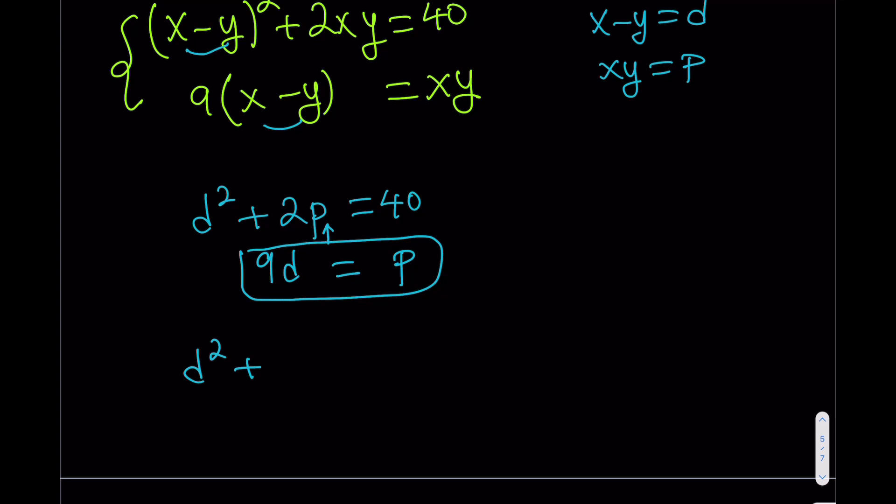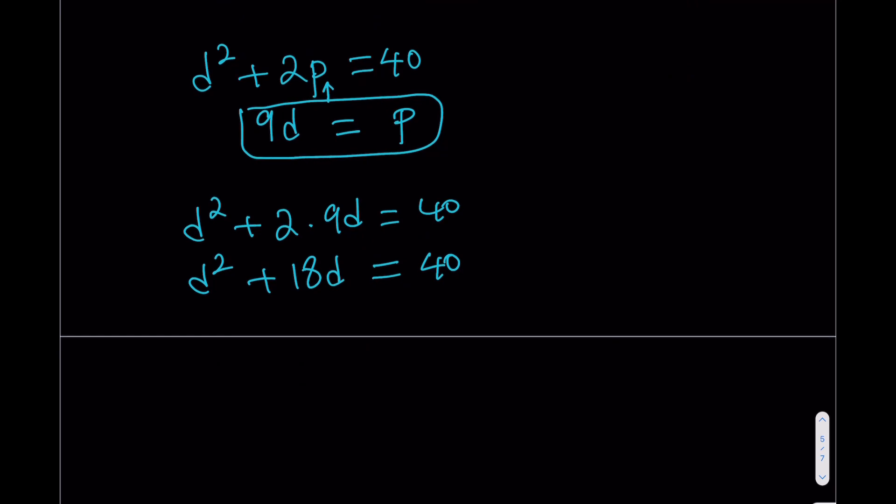D squared plus 2 times P, which is 9D equals 40. This should give me... that looks familiar. Well, let's leave the 40 there because we're going to add something. Half of 18 is 9, 9 squared is 81. So I'll be adding 81 to both sides because I want to complete the square. Adding 81 to 40 is going to give me 121. Beautiful. I like it because it's 11 squared. Then I'll be getting something good. From here you can split it up.